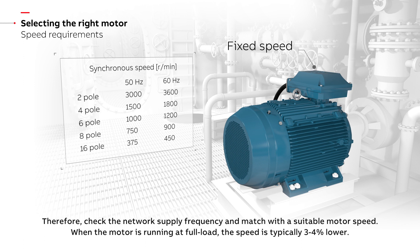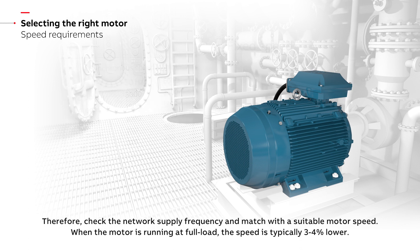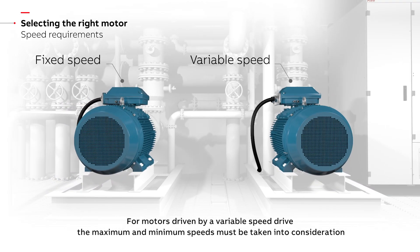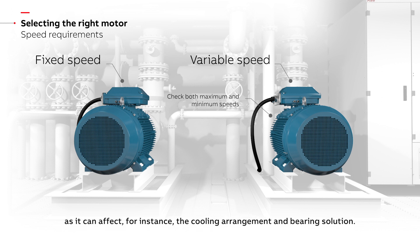When the motor is running at full load, the speed is typically 3 to 4 percent lower. For motors driven by a variable speed drive, the maximum and minimum speeds must be taken into consideration, as it can affect, for instance, the cooling arrangement and bearing solution.